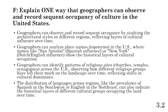We can look at architecture, toponyms, religious sites, languages being spoken, and even political structure and priorities to record and observe sequent occupancy. This is not an exhaustive list — these are what I'd consider the most common responses to a prompt like this on the AP exam.